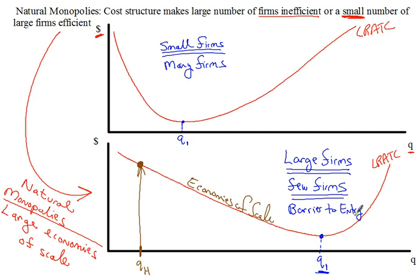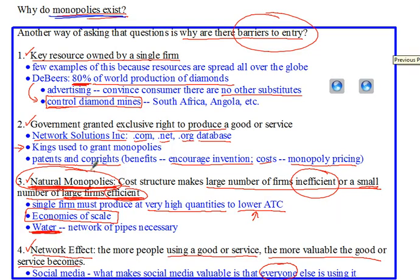If there's a barrier to entry, that gives the firm some level of monopoly power. That's why the natural monopoly is one of our barriers to entry that allows firms to have some level of monopoly power. This has been Mr. Hagen with another Econ Podcast — thanks for joining me, and we'll see you on the next one.